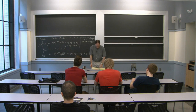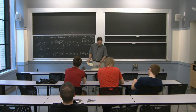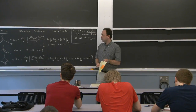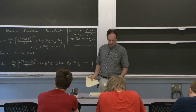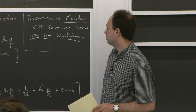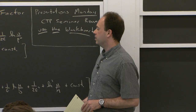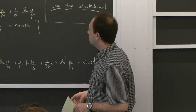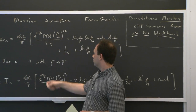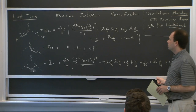Last time we were talking about the massive Sudakov form factor. We're going to continue that discussion today. We saw that in order to do this calculation, we needed to have an additional regulator besides dimensional regularization. This was an example in SCET2 where we had these rapidity divergences, and there was this additional regulator that led to these 1/eta poles in our answer, and these logs of nu as well.